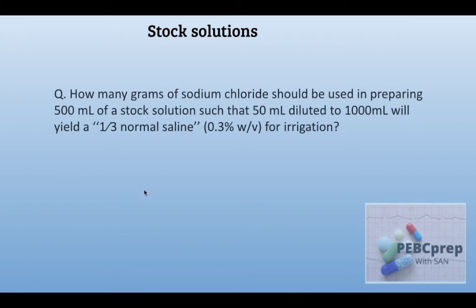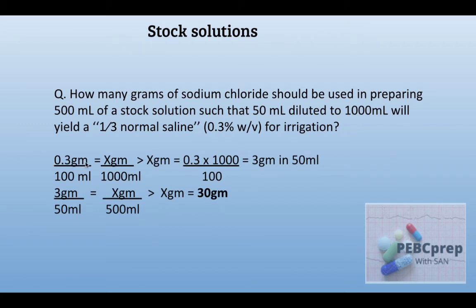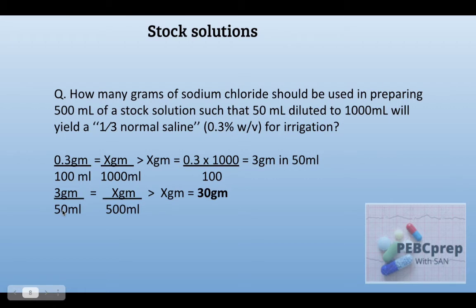Next question: how many grams of sodium chloride should be used in preparing 500 ml of a stock solution such that 50 ml diluted to 1000 ml will yield a 1/3 normal saline (0.3% w/v) for irrigation? We get 0.3 grams in 100 ml, so in 1000 ml that's 3 grams. Since 50 ml were diluted to 1000 ml, those 3 grams were initially in 50 ml. If 3 grams in 50 ml, then in 500 ml we get 30 grams.